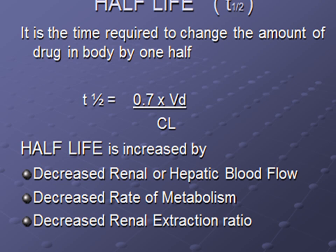If the volume of distribution is greater, the half-life will be longer. If clearance is greater, the half-life will be reduced. Half-life is increased by decreased renal or hepatic blood flow — if these main excreting organs have reduced blood flow, the drug concentration will increase in the body.